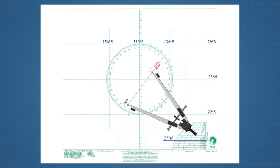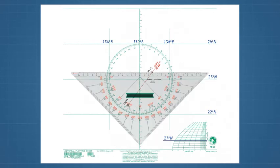Label the DR position 1715. The latitude for this position, according to the latitude scale, is 23 degrees 12 minutes north.